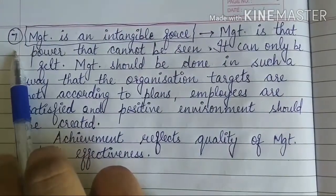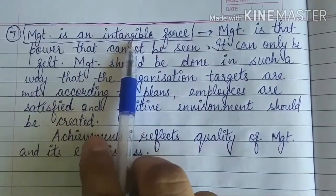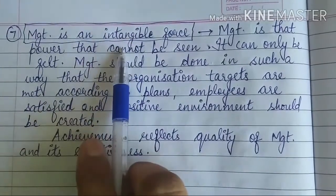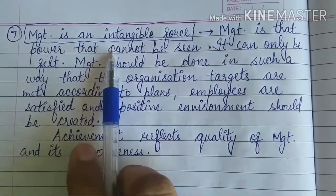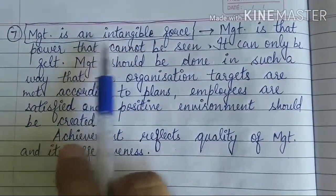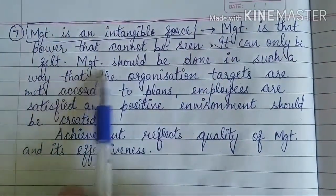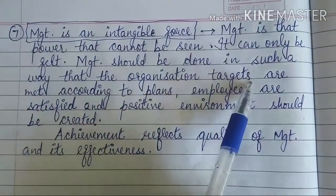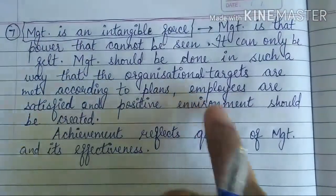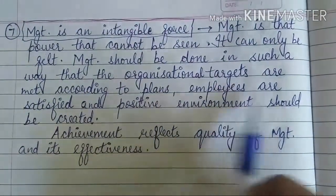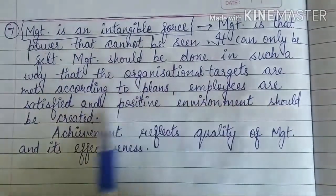Now comes the last feature of management: management is an intangible force. Intangible means it cannot be seen — it can only be felt, just like intangible assets in accounting. Management is that power which cannot be seen but can only be felt. Management should be done in such a way that organizational targets are met according to the plans and employees are satisfied, and a positive environment is created.